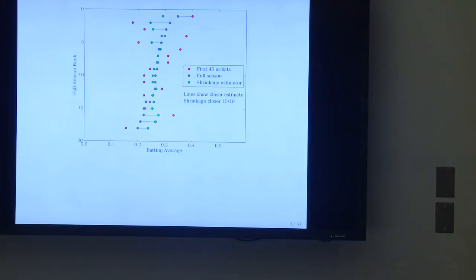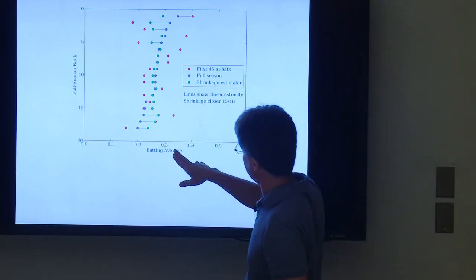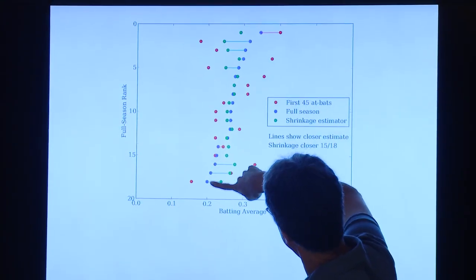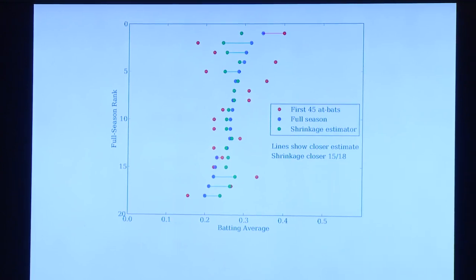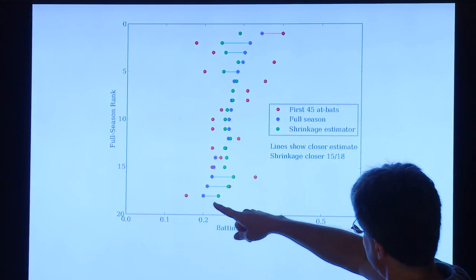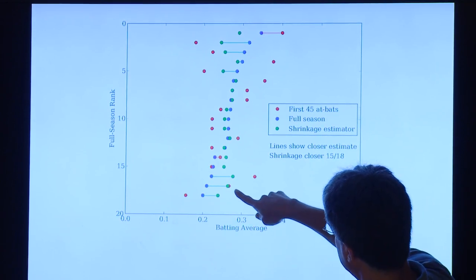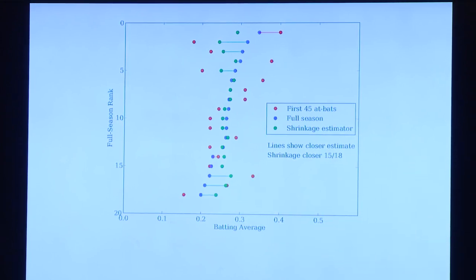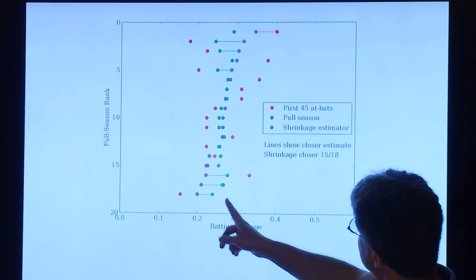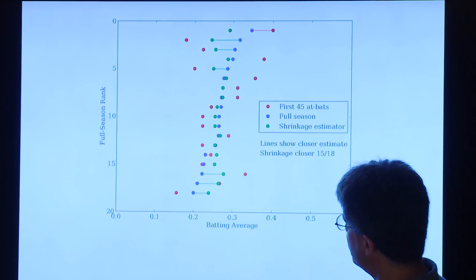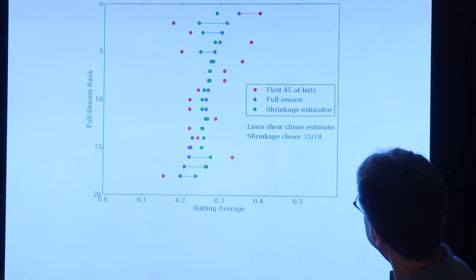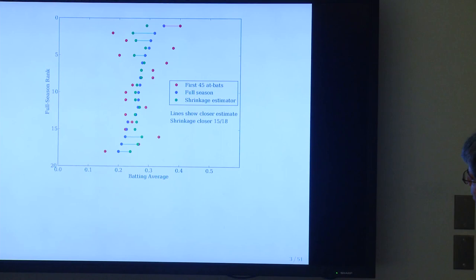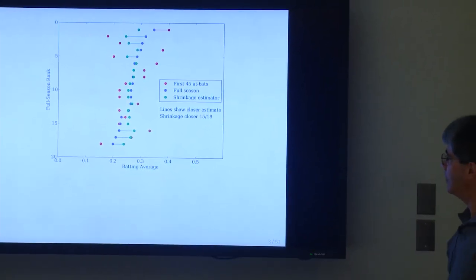I've shown the RMSE between the James-Stein estimates and the true estimates, and the RMSE between the maximum likelihood independent estimates and the truth. In fact it's actually quite a bit smaller. I depict it another way on this plot, showing batting average and full season rank of the player. The lines connect whichever estimate is closer to the true value for each player, and in almost every case it's the green shrinkage estimate that's closer to the truth.